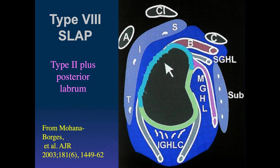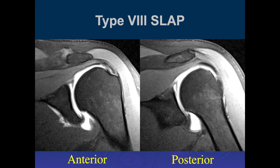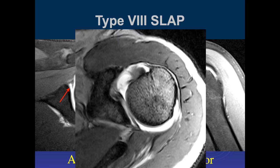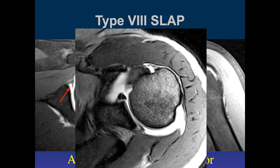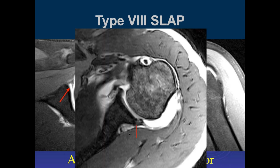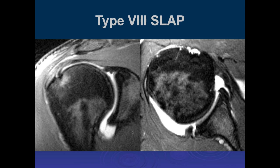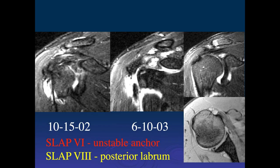Type 8 is a Type 2 superiorly that extends posteriorly. We see a superior labral tear with a thinned and irregular biceps anchor, and then following posteriorly we can trace the tear going into the posterior labrum, extending all the way down. You see these a lot in weightlifters doing bench press and football linemen or baseball pitchers who strengthen pectoralis muscles. Here's another Type 8 — a superior labral tear extending posteriorly — though I just describe the tear rather than assigning a type.